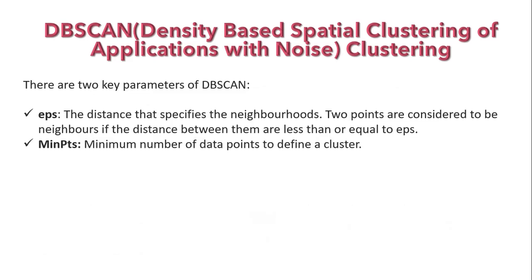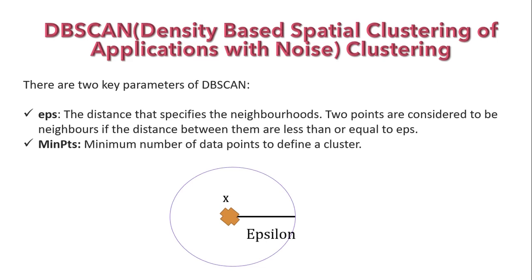There are two major parameters for clustering data with DBSCAN: epsilon and minimum points. Epsilon is nothing but the radius of a circle. Let's say we have a point x, and from this point we take a distance of 2 units and draw a circle, considering this as the radius — or epsilon.